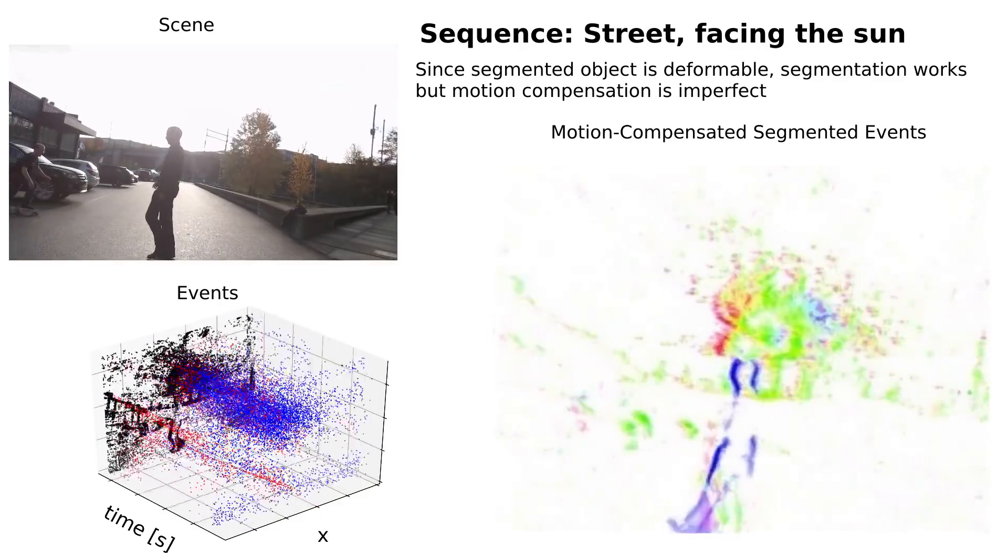Here we demonstrate the high dynamic range capabilities of event cameras by looking straight into the sun.